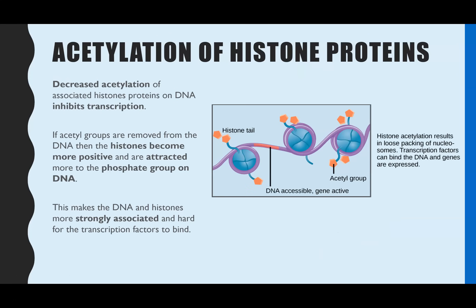Acetyl groups are the other type of chemical tag. Acetyl groups only bind to the histones — directly to the protein. They have the opposite effect: acetyl groups are also negatively charged, just like the DNA, so they repel each other. That means the DNA doesn't tightly coil; instead it's far more loosely packed, leaving the DNA accessible for transcriptional factors to bind, and therefore transcription of that gene can occur.